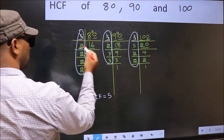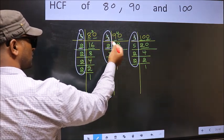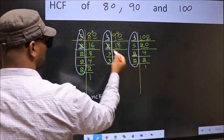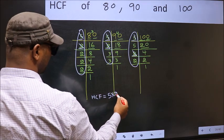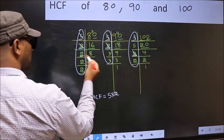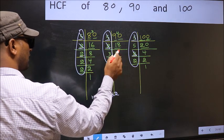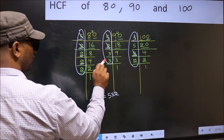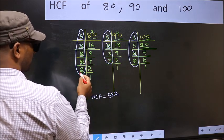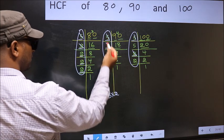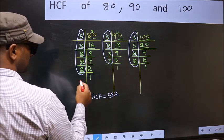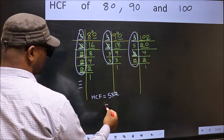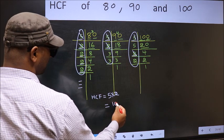Next number 2: do we have 2 in all three factorizations? Yes. So write down 2. Next 2: is it present in all three? No. Next 2: present in all three? No. Next 2: present in all three? No. No more numbers are left. Therefore HCF is 5 times 2, which equals 10. So 10 is our HCF.